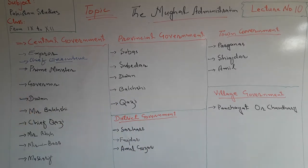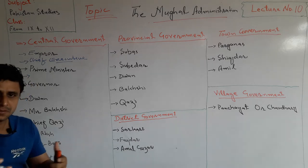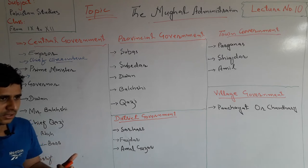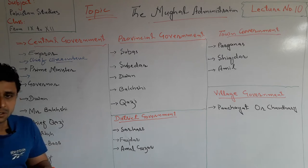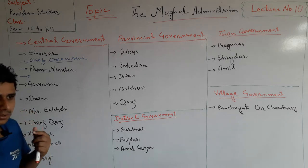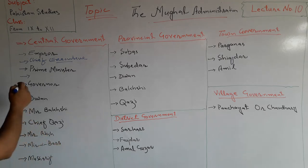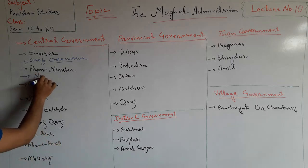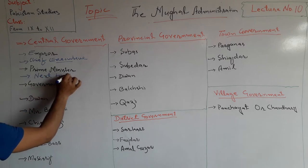The Prime Minister was next to the Emperor. He collected information from all the provinces, all the regions, and all the areas of the Mughal Empire, and presented that information to the Mughal Emperor. So he was next to the Emperor.